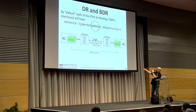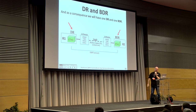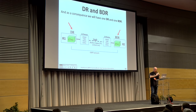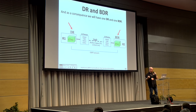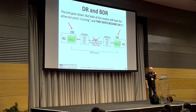By default, the network type is broadcast and the priority is 1. You will have a DR and a BDR. They are elected by priority value; if you leave it at the default of 1, the router ID is used to elect DR and BDR. Everything is running fine — until something happens. The link goes down.